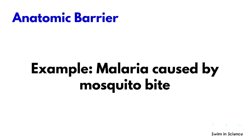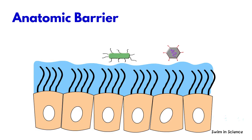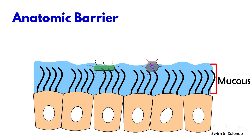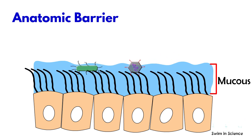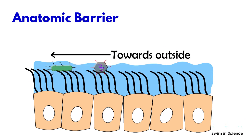An example is malaria caused by a mosquito bite. Another anatomic barrier is the mucous membrane lining the respiratory tract. They secrete mucus, which traps the pathogens, which are later pushed by cilia toward external nasal openings.